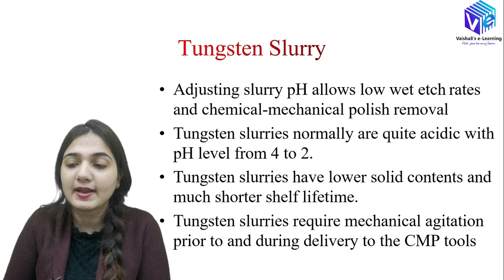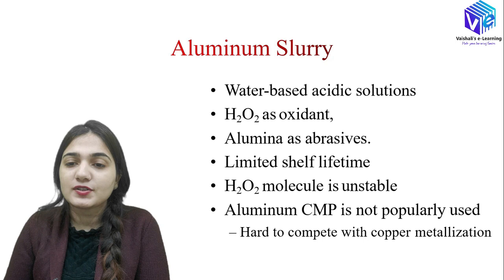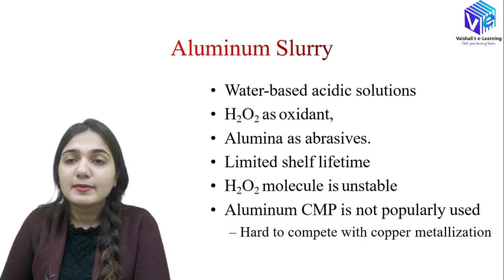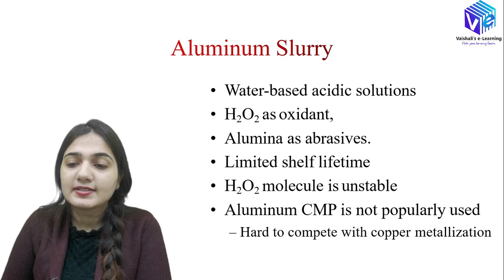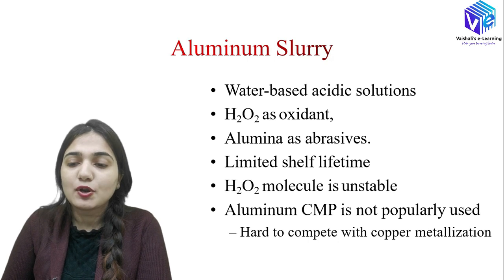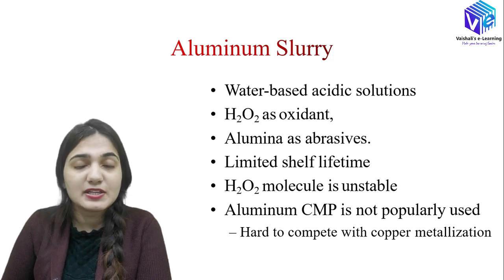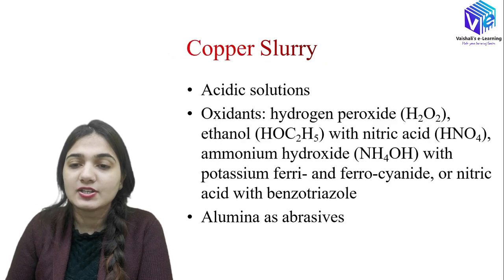Tungsten slurry requires mechanical agitation prior to and during delivery to the CMP process. Aluminium slurry is a water-based acidic solution using hydrogen peroxide as the oxidant and alumina as the abrasive; the shelf lifetime is again limited. The hydrogen peroxide molecule is unstable, so the oxidant is unstable, and aluminium CMP is not commonly used — it is hard to compete with copper metallization.